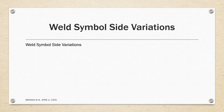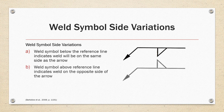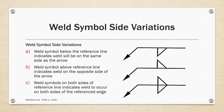Weld symbol side variations: a weld symbol below the reference line indicates the weld will be on the same side as the arrow. For example, a fillet weld symbol below the line means the weld is on the same side that the arrow is pointing to. The weld symbol above the reference line indicates the weld is on the opposite side of the arrow. If the symbol occurs on both sides of the reference line, it indicates the weld is going to occur on both sides of the referenced edge.